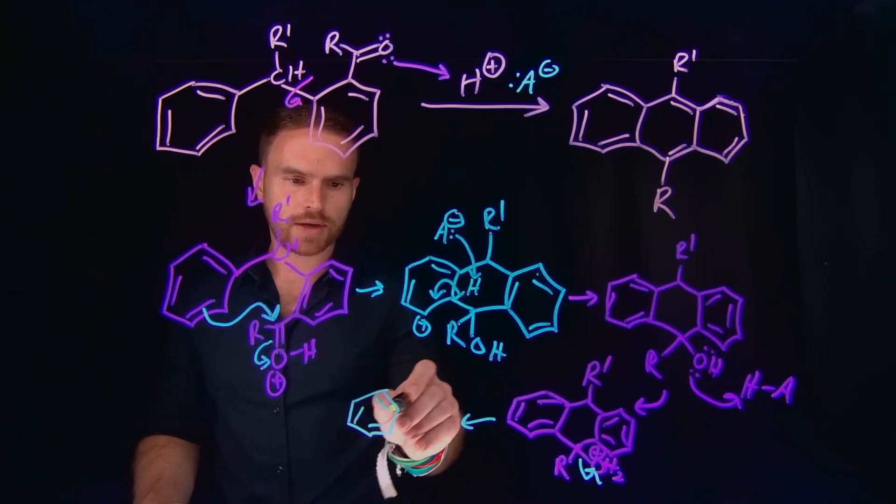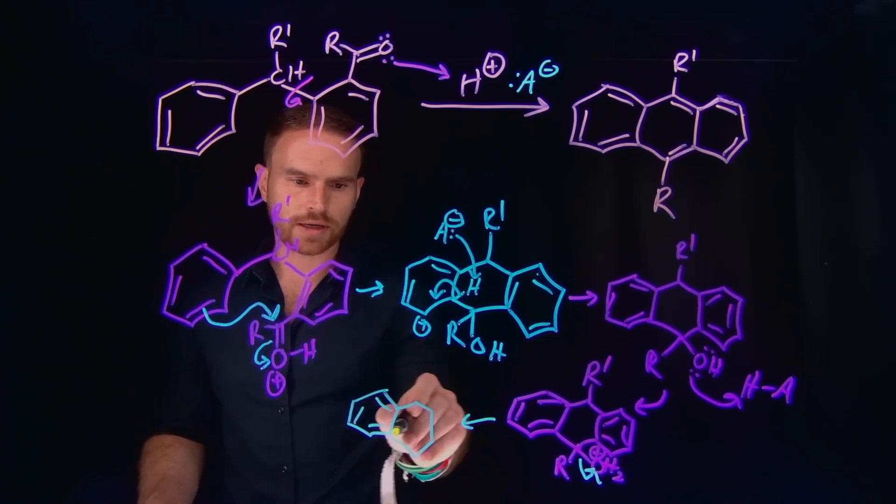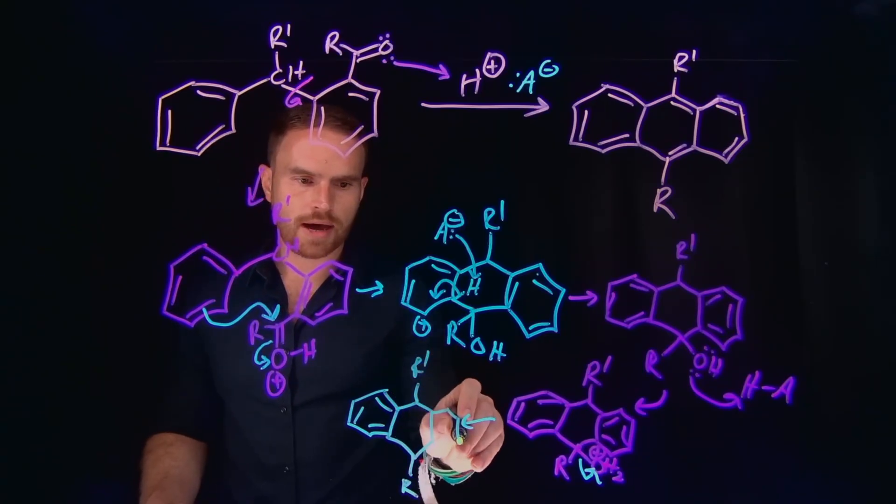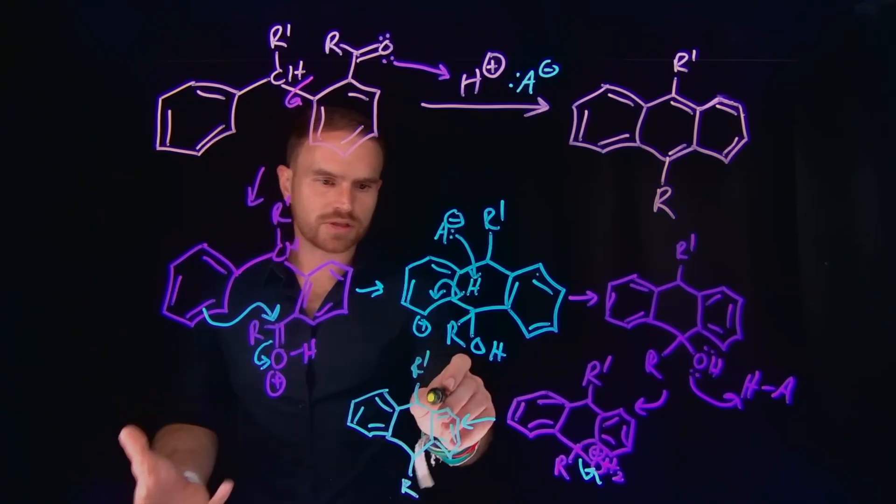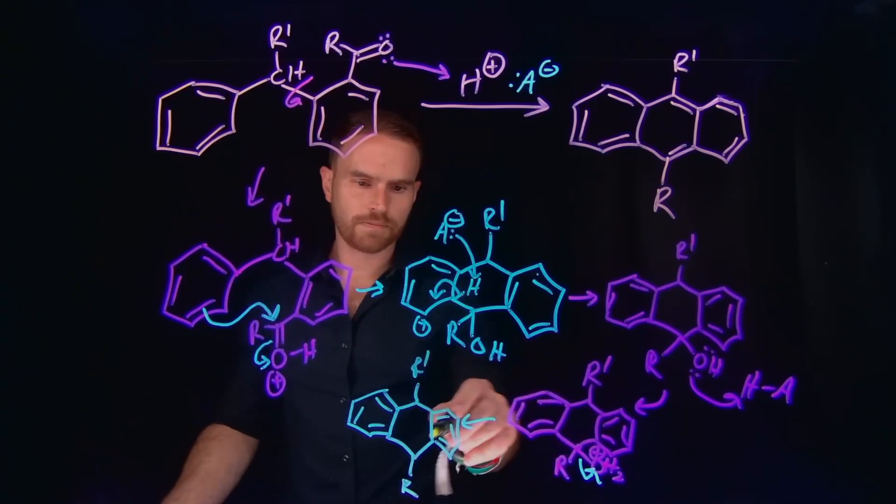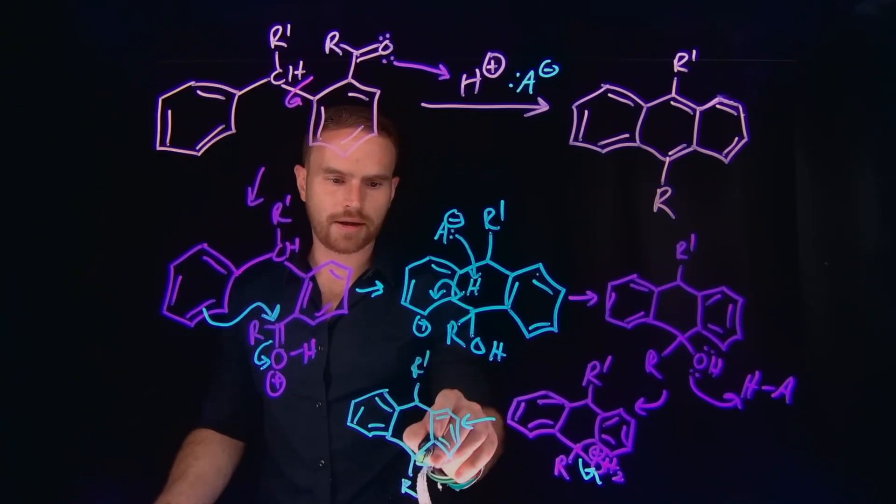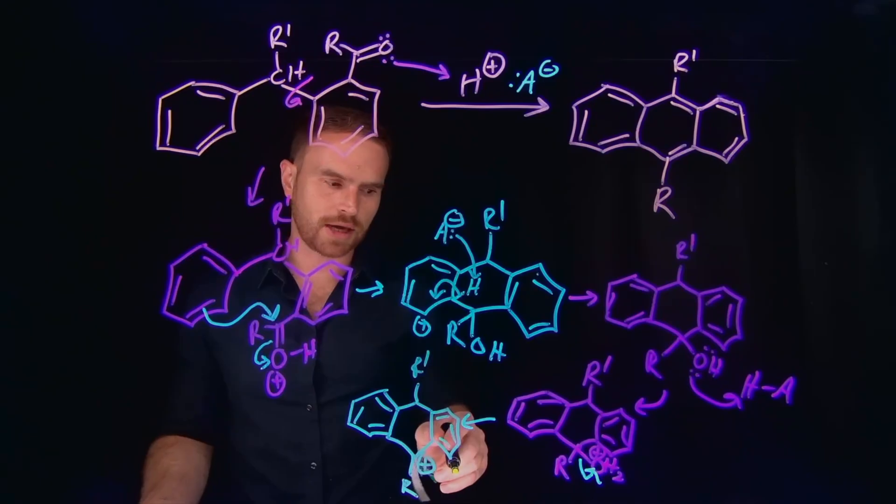So now we have all of these three rings. We have our R group down here and our R prime here. We have the aromatic ring on this side. And then importantly, remember, there's still a bunch of hydrogens around here. So there's going to be a carbocation that we eventually need to deal with at this location.